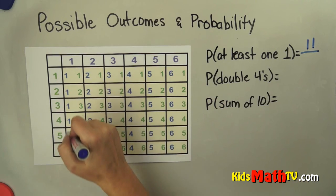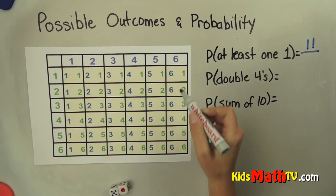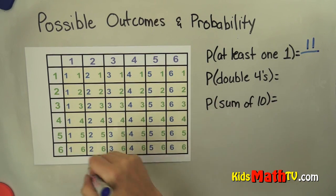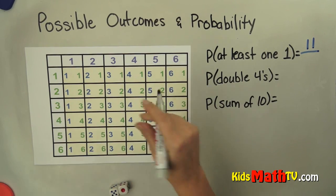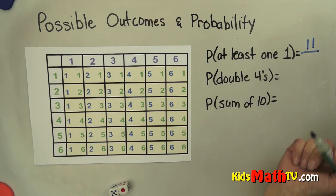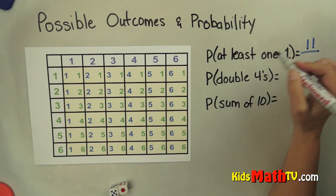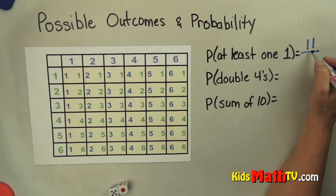But all together there are 6 times 6 total outcomes. So there are 36 outcomes all together. 11 of them have at least one 1 in them. So the probability of rolling at least one 1 is 11 out of 36.